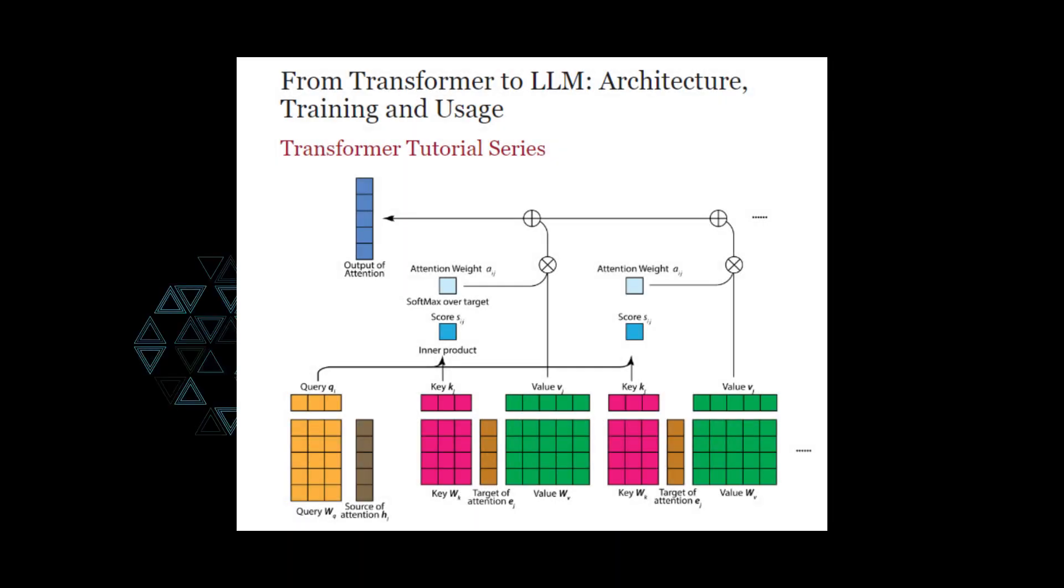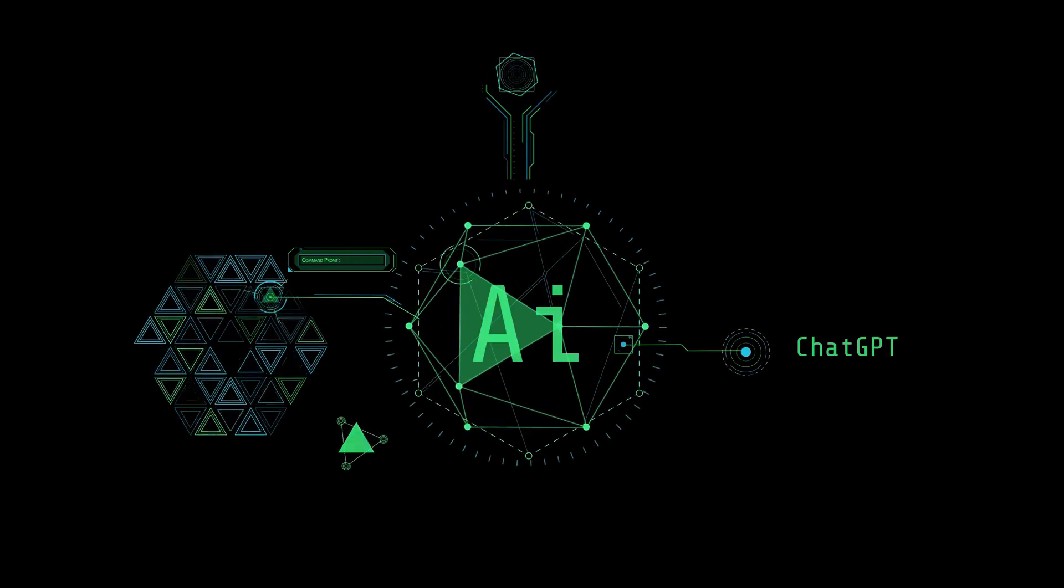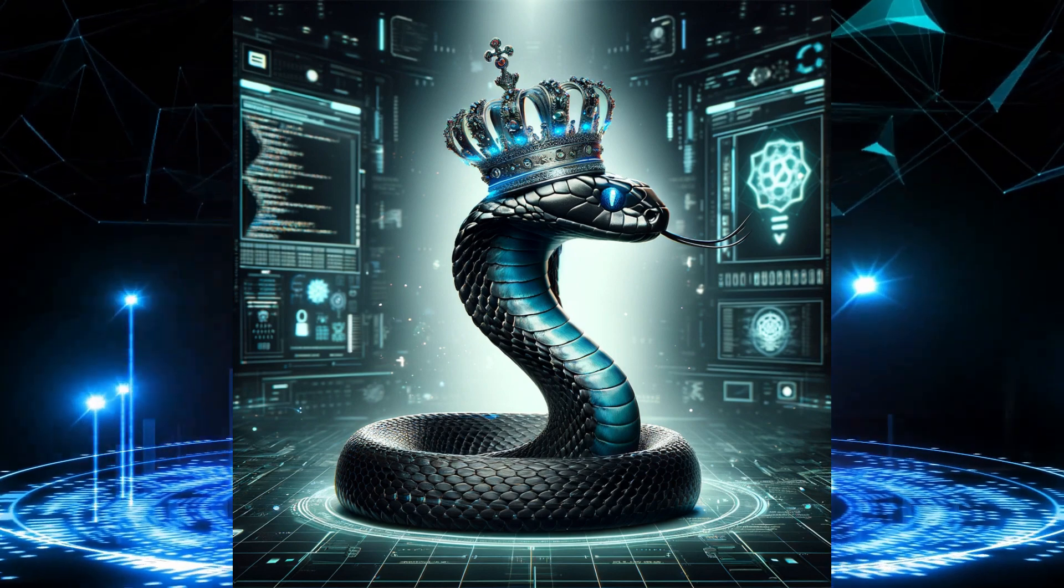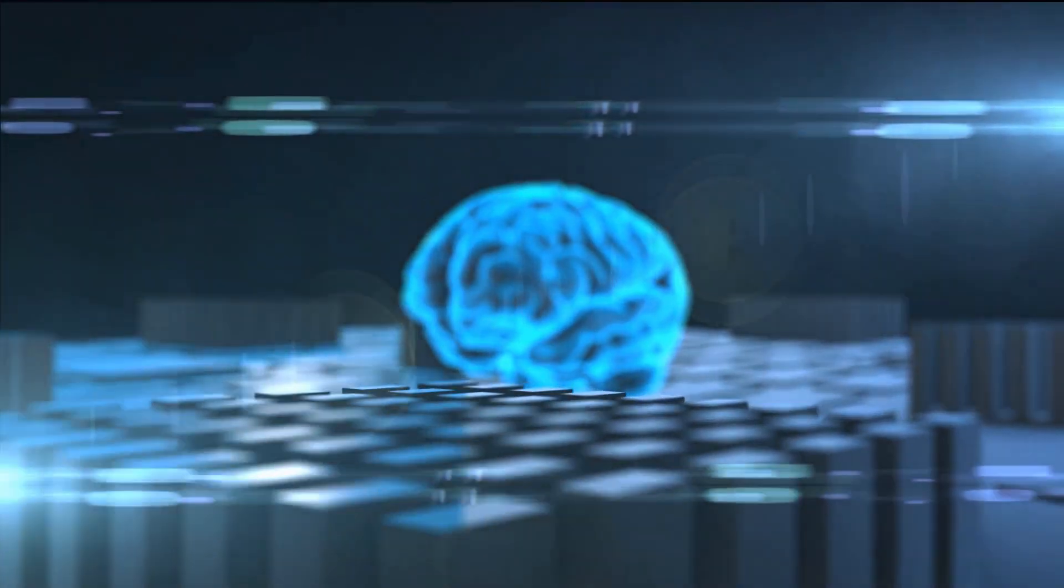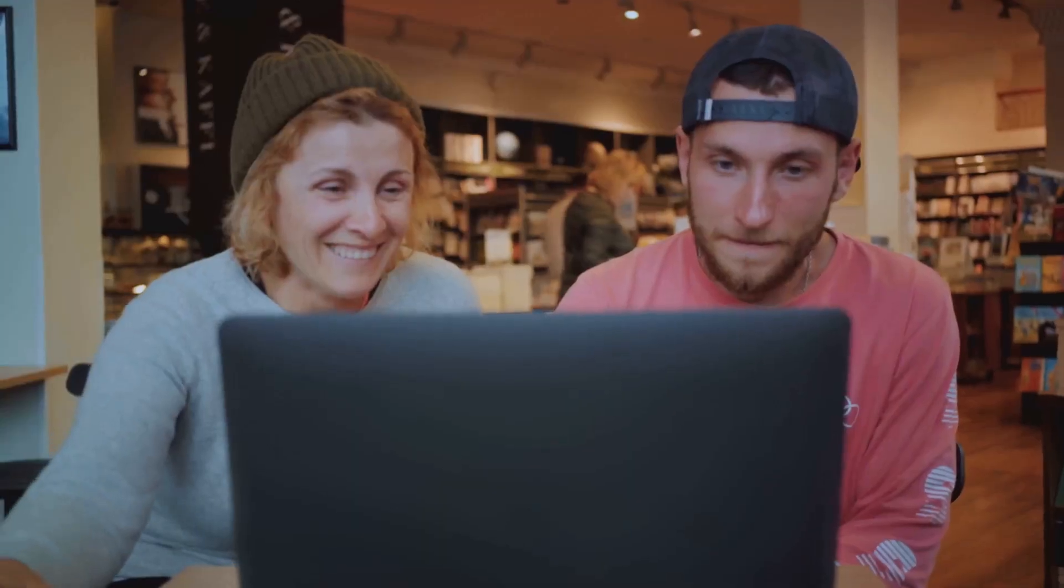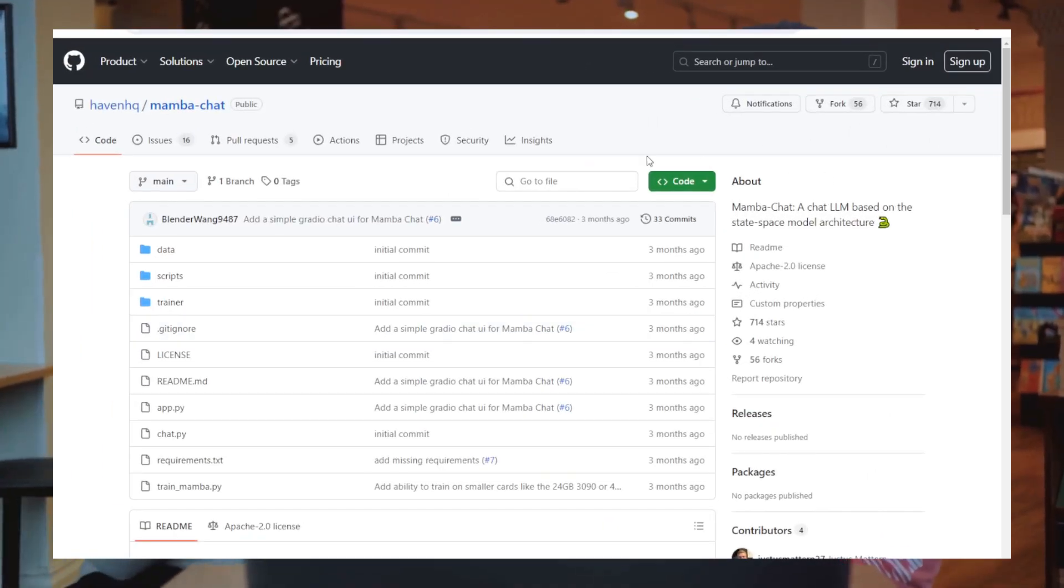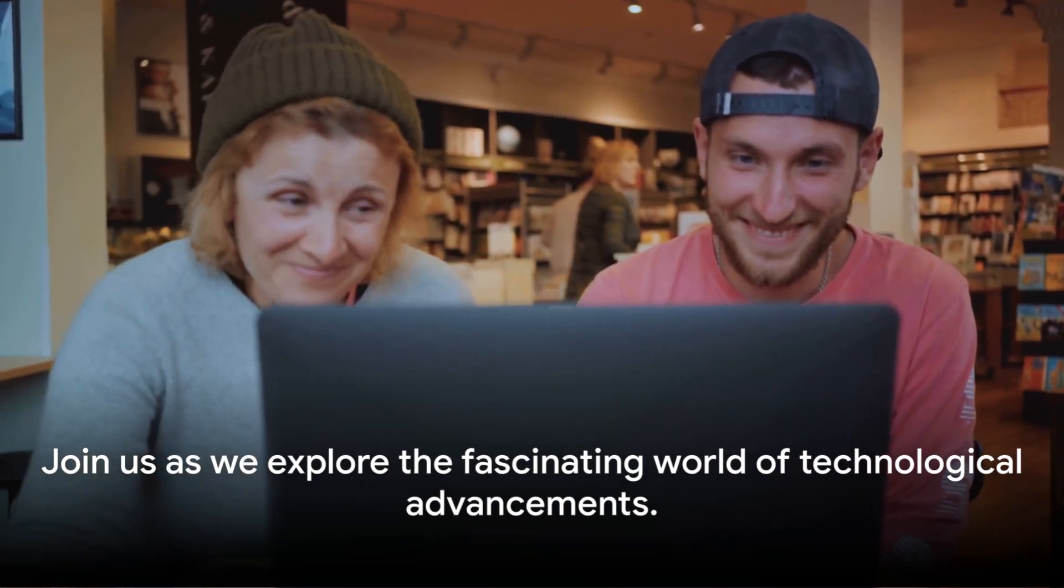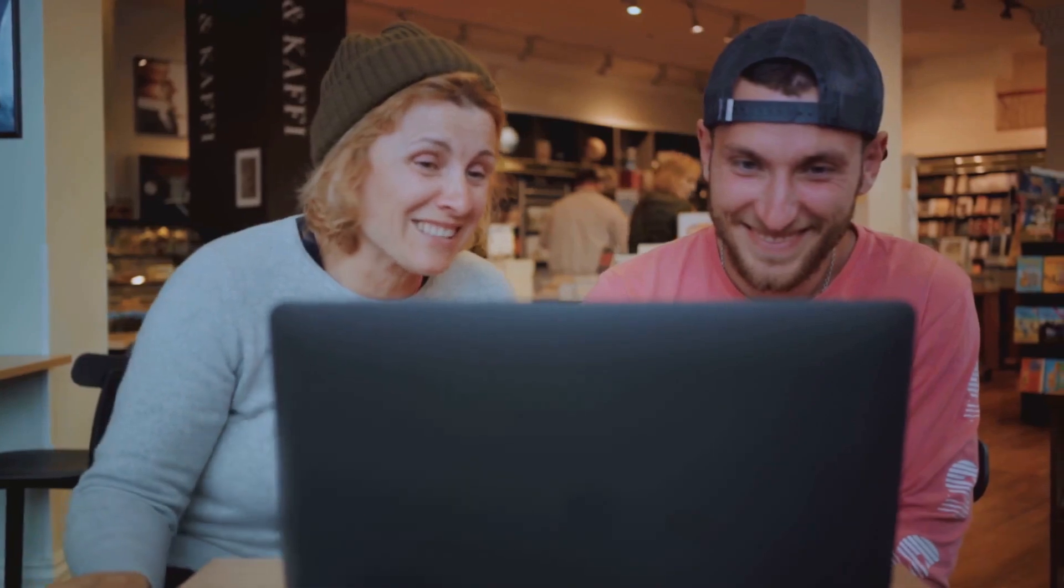The mighty Transformer, once a cornerstone of AI, is now facing a potential fade-out, its dominance threatened by the rising prowess of Mamba and LLMs. But what is it that makes these two entities so disruptive? What is the secret behind their potential to outshine the Transformer? These are some of the questions we'll explore as we embark on this journey. So, buckle up and join us as we delve deeper into this fascinating world of technological advancements.